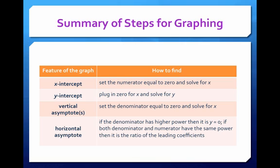For the y-intercept, we simply plug in 0 for x and solve for y. For the vertical asymptotes, we set the denominator equal to 0 and solve for x.